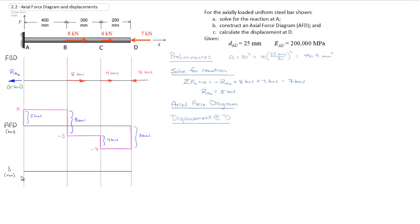Now that we have the axial force diagram drawn and we have our internal forces laid out, we're ready to go ahead and calculate our displacements. To calculate our displacements at D, we need to calculate our displacements from the support at A.